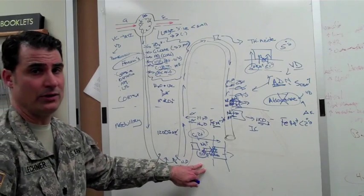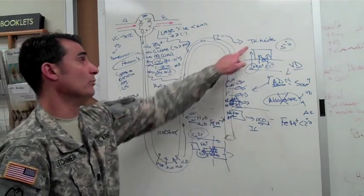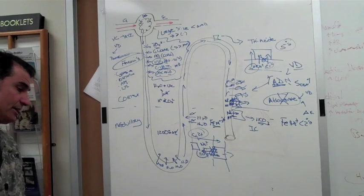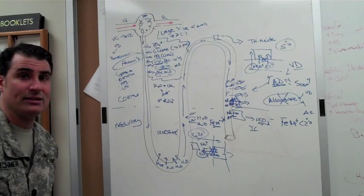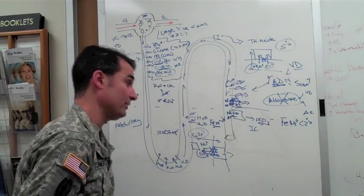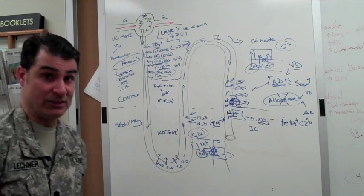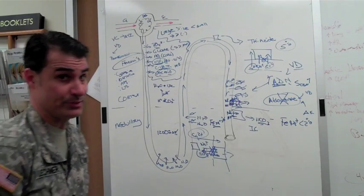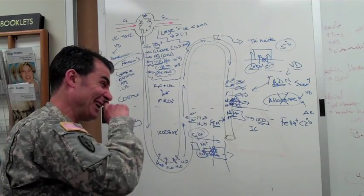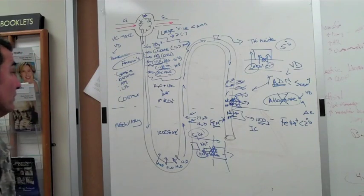The loop diuretic that's turned on all the time is called Bartter's. The one that actually has the thiazide turned off, or as if you were giving thiazide all the time, that's known as Gitelman's. And then Liddle syndrome is when the patient becomes hypertensive because it's like they have their ENAC channel turned on the whole time.